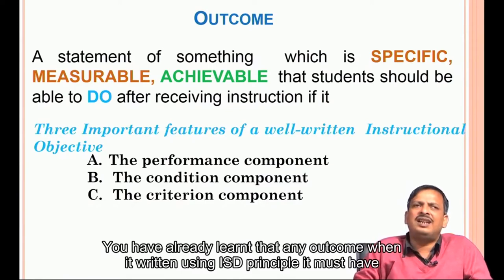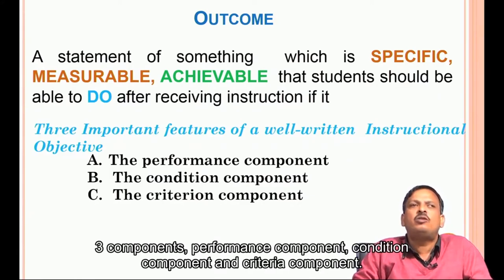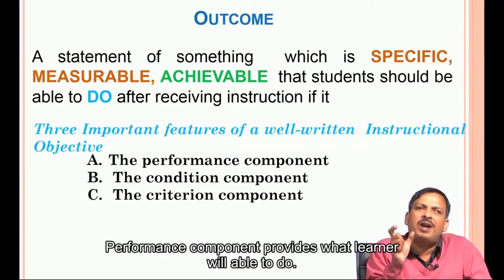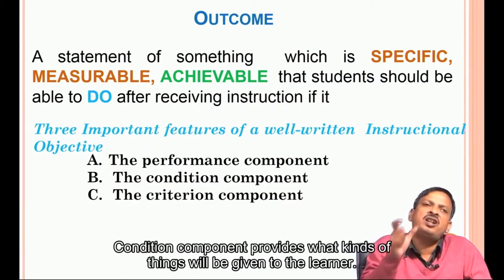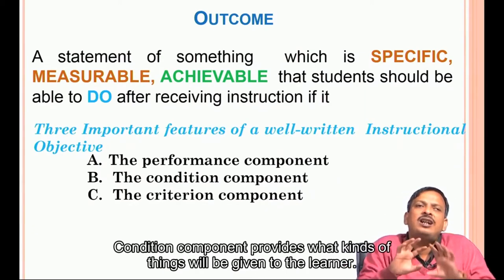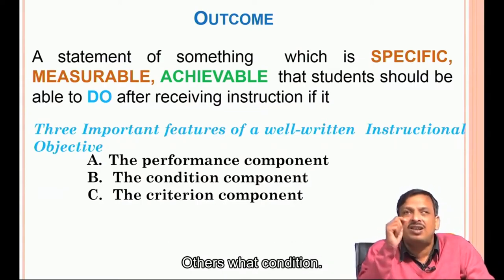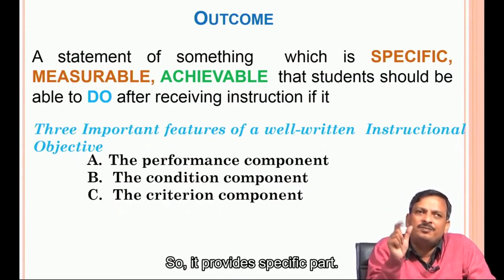You have already learned that any outcome written using ISD principle must have three components: performance component, condition component, and criteria component. The performance component defines what the learner will be able to do. The condition component specifies what will be given to the learner and under what condition — so it is actually related to specificity, providing the specific part.